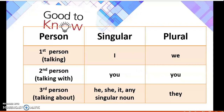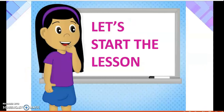Before starting the actual topic, let us discuss this chart. This chart is also known as the tense chart, in which we come to know about persons — first person, second person, and third person. The first person is the person who is talking, that means 'I,' and if more than one person is talking, then we use 'we.' The second person — to whom I am talking — is 'you.' And the third person — to whom we are talking about — would be 'he,' 'she,' 'it,' or any singular noun. This is the chart which we are going to use for our tenses.